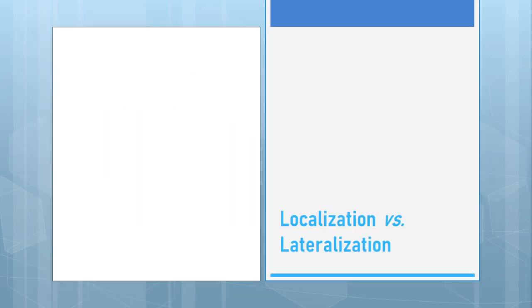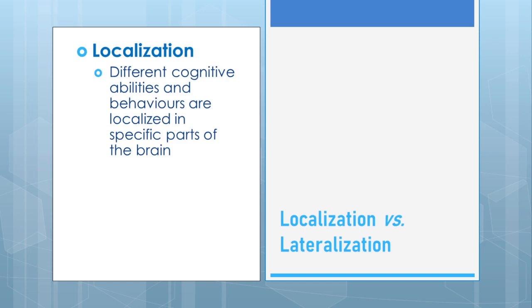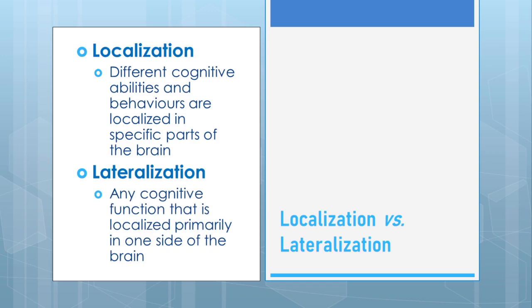Now coming to localization and lateralization — is there any difference? Localization means that different cognitive abilities and behaviors are localized in specific parts of the brain. As we have seen in the previous classes, there are different cortical areas and each cortical area is assigned with a special function; in other words, each cognitive ability is localized in specific cortical areas. Lateralization means that some cognitive functions are primarily localized in one side or one hemisphere of the brain, so that hemisphere becomes functionally dominant over the other with regard to a particular function.